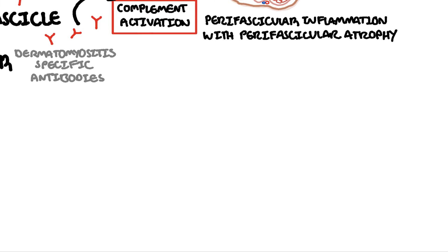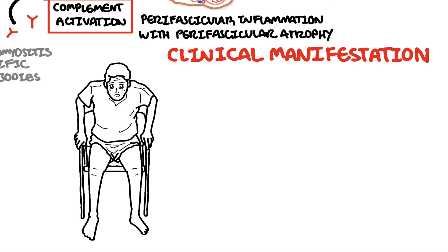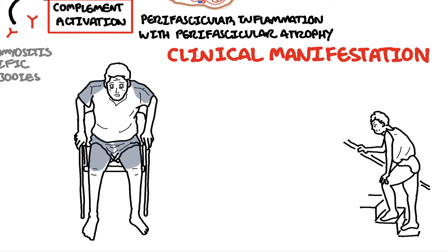With all this inflammation of the muscle as well as of the skin, dermatomyositis manifests with both muscular symptoms and skin signs. People present with gradual proximal symmetrical muscle weakness in the shoulders and in the hips, and often complain of weakness climbing up stairs or standing from a seated position.